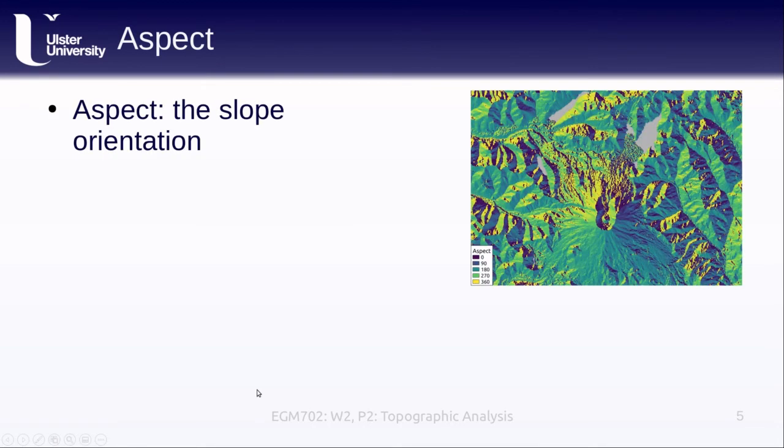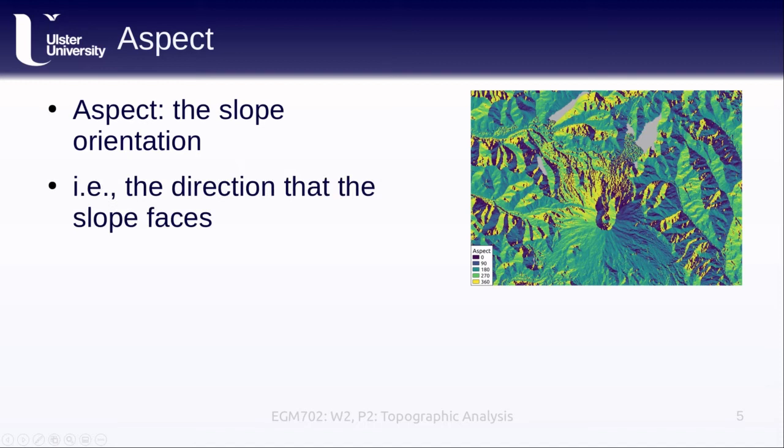This is just the orientation of the slope with respect to some zero value. If we are thinking about this in terms of a map, we usually have the slope ranging from values of 0 to 360, where 0 and 360 both represent due north, 180 represents due south, 90 is east, 270 is west.